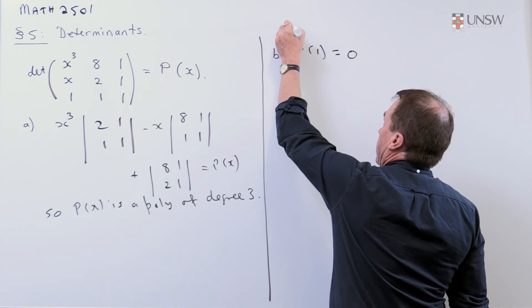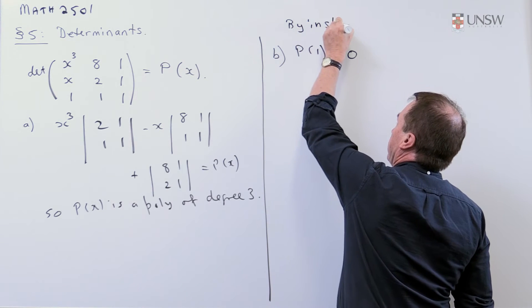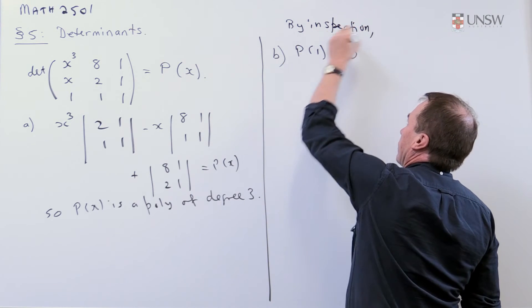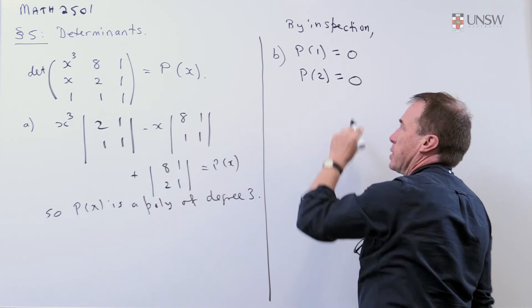And so I'm just going to say, by inspection, P(1) is 0, and P(2) is 0.